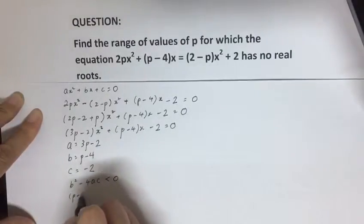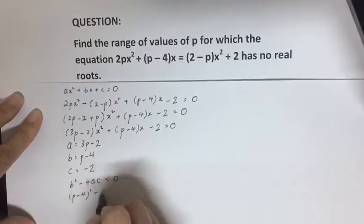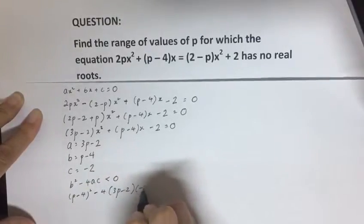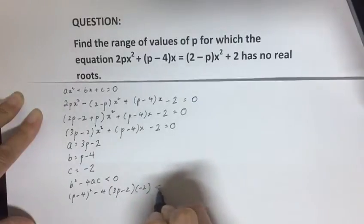Substituting this ABC into the inequality, we get this: (p - 4)² - 4(3p - 2)(-2), and this should be less than 0.